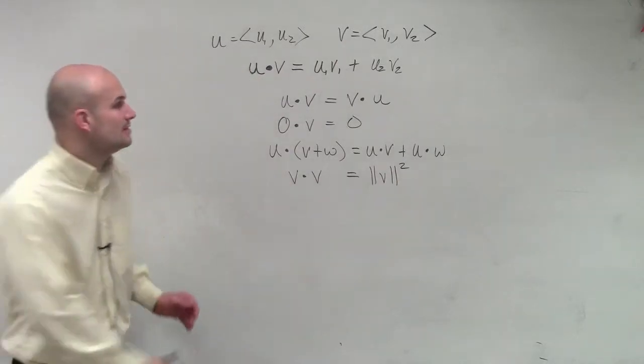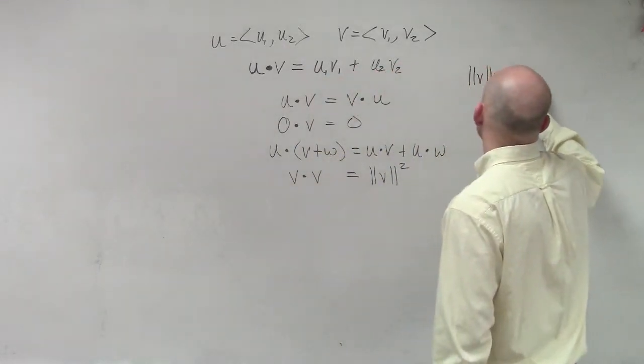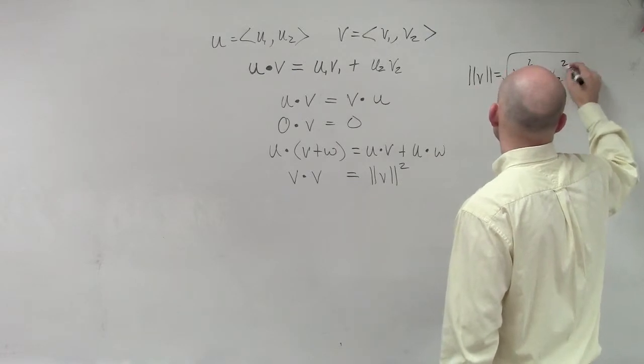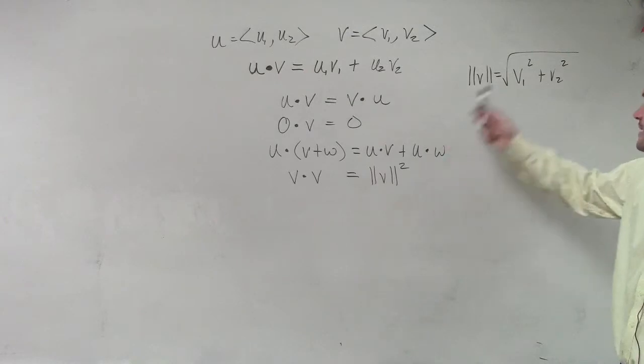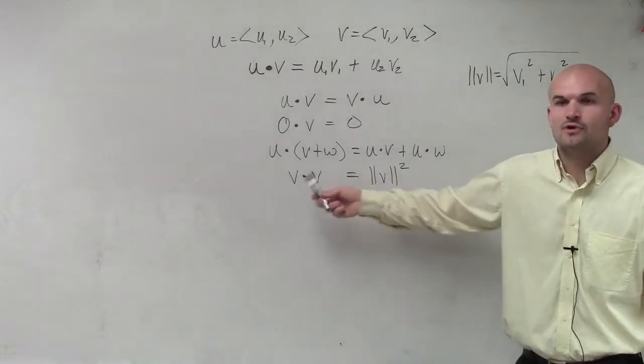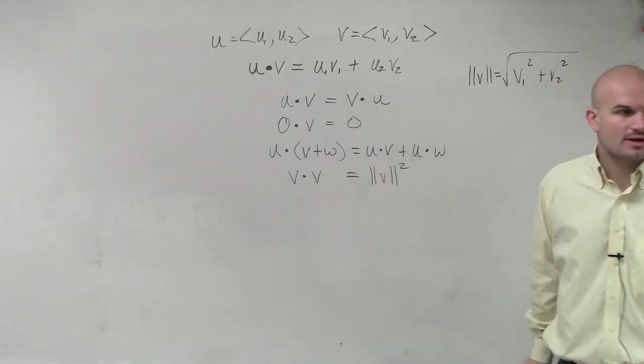Remember the magnitude of v equals the square root of v1 squared plus v2 squared. So the square of that is just going to be v1 times v1, which would be v1 squared, plus v2 times v2 squared, which would equal that.